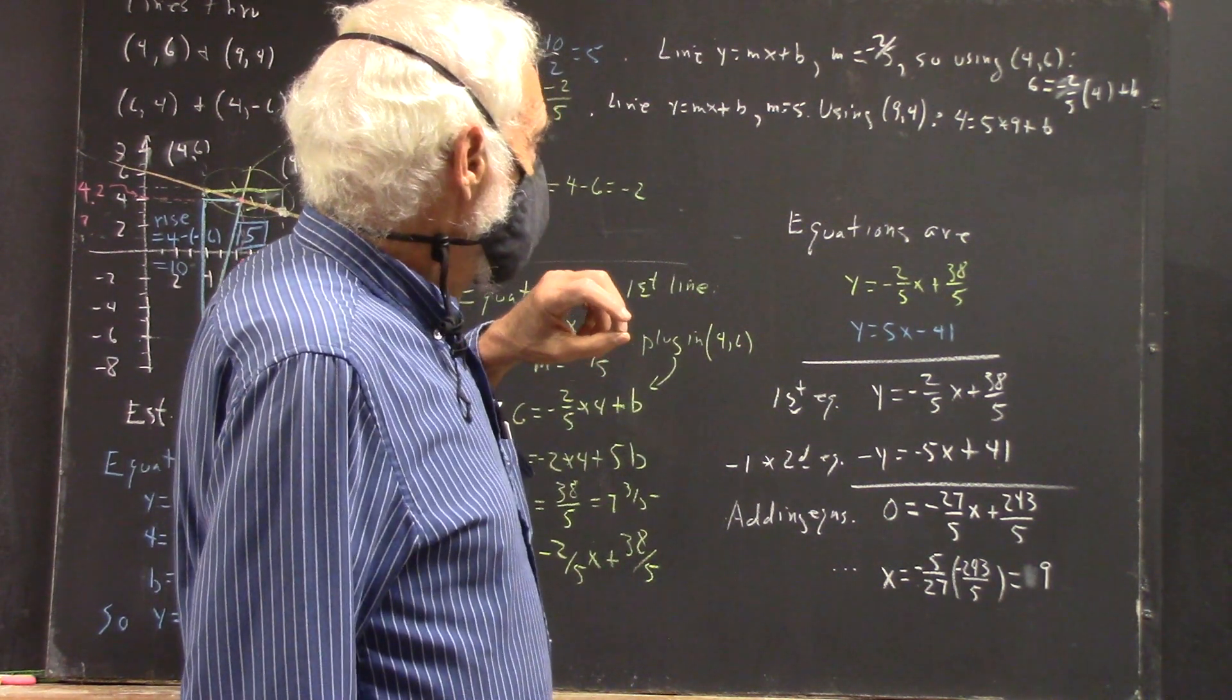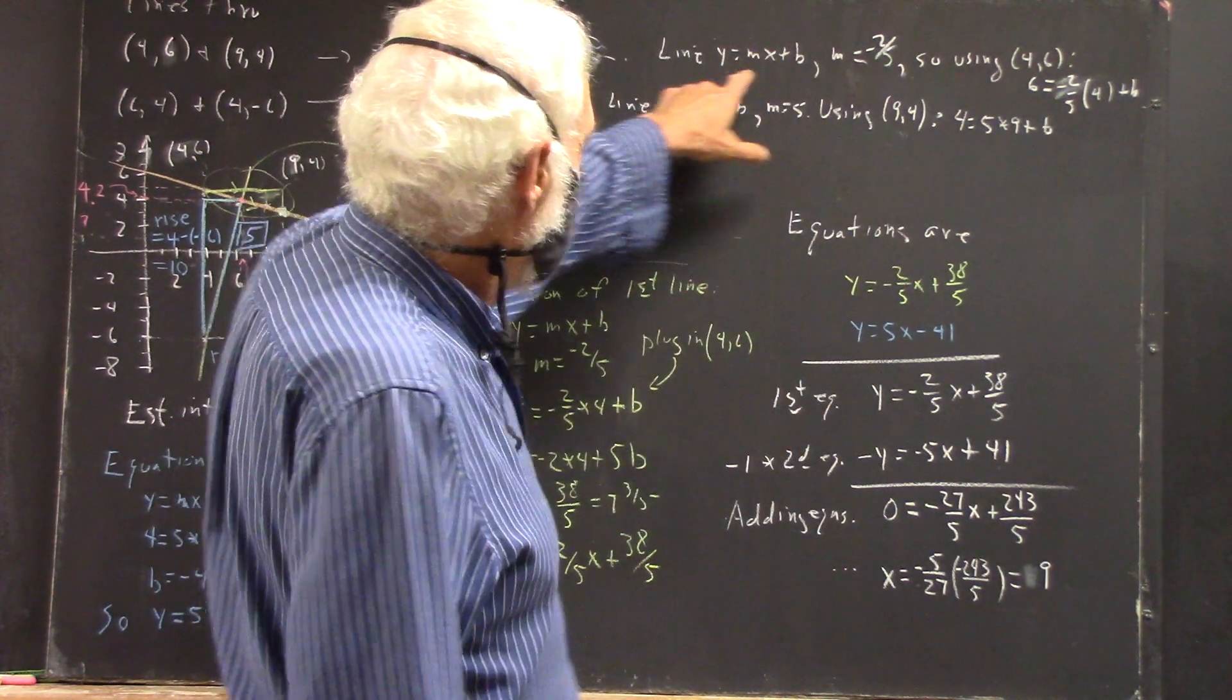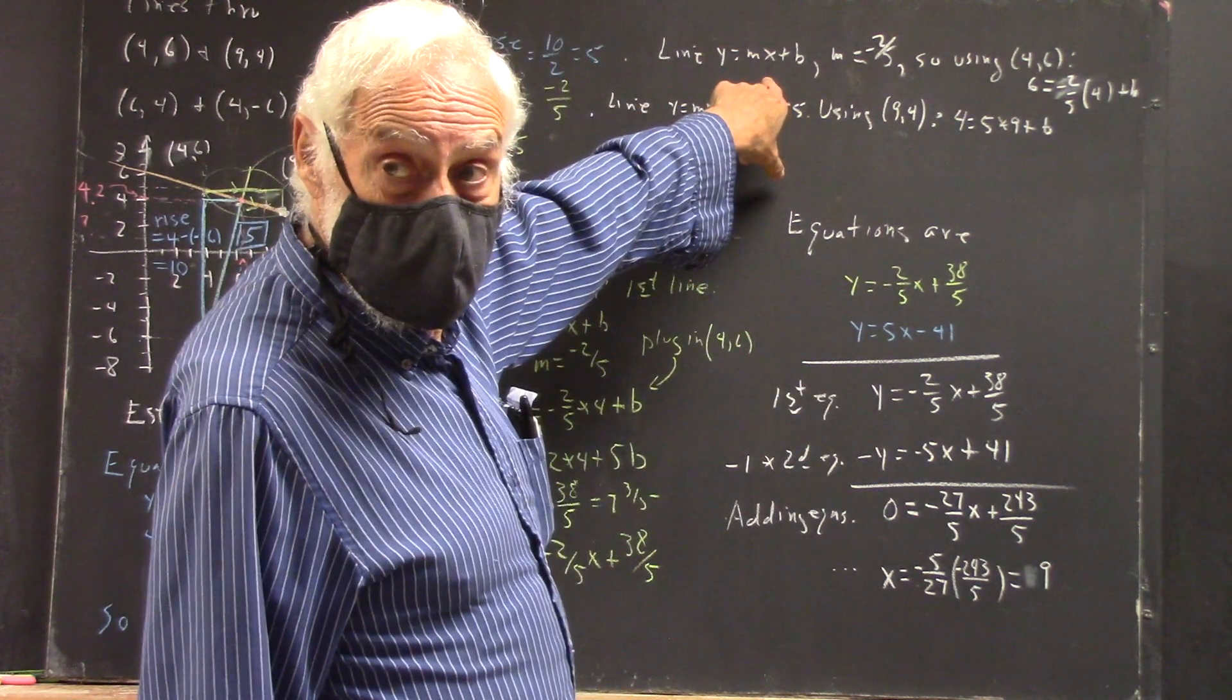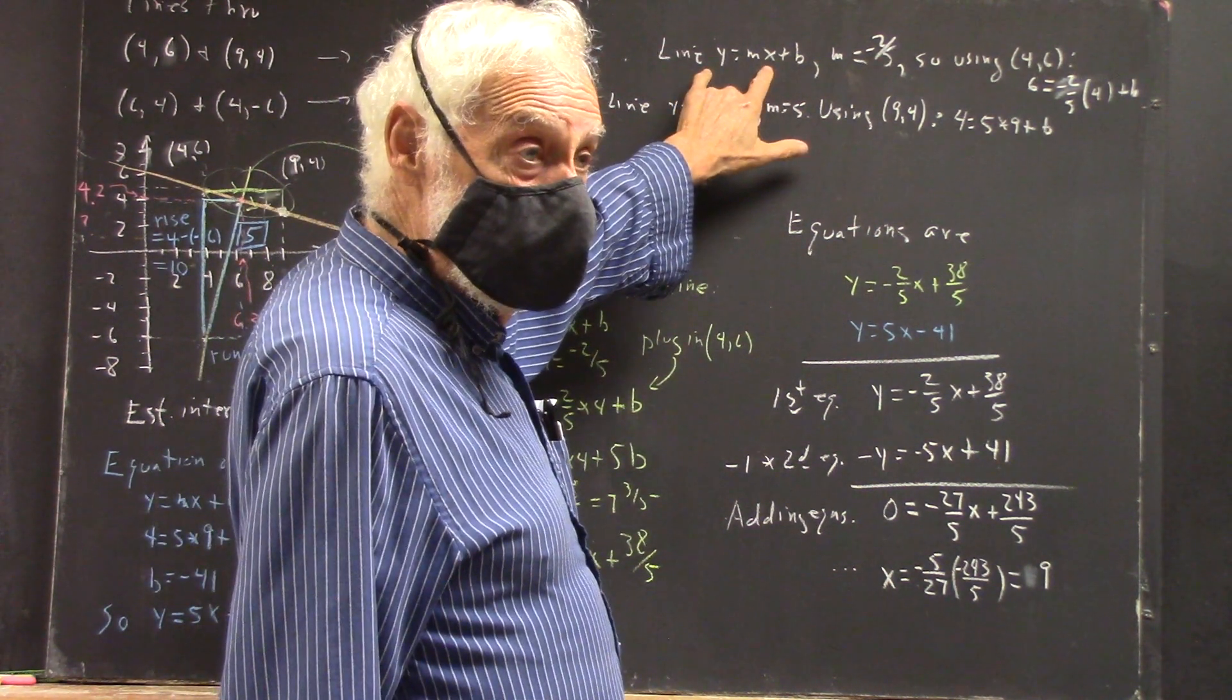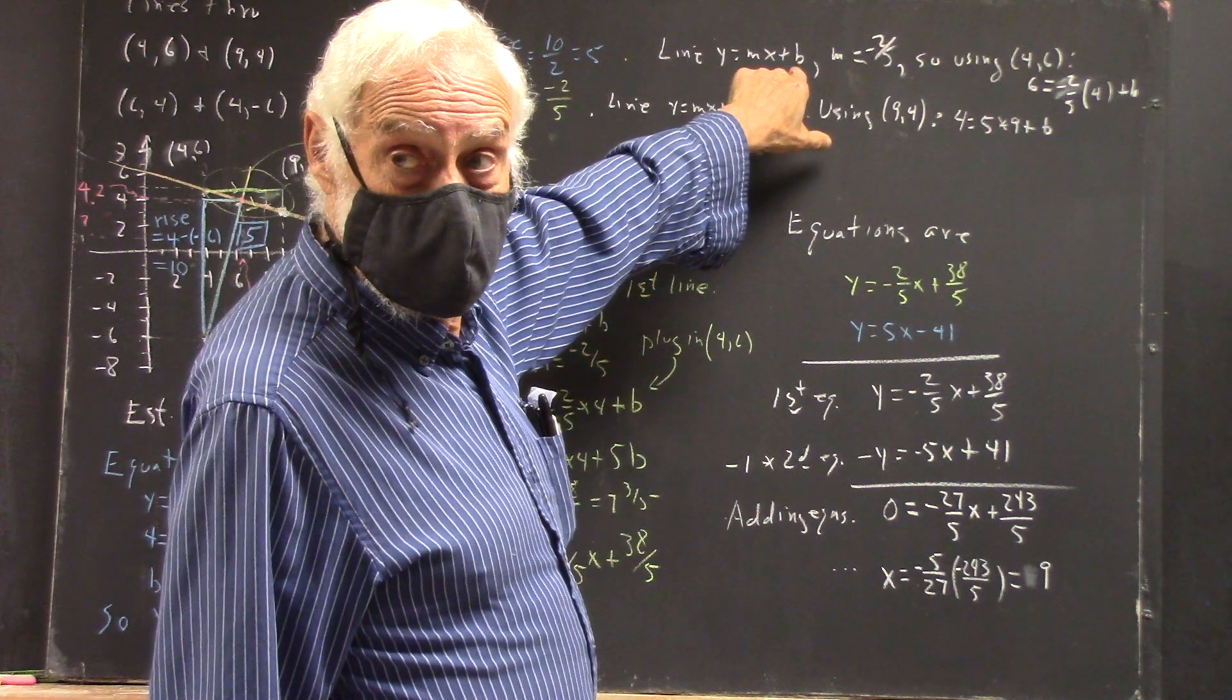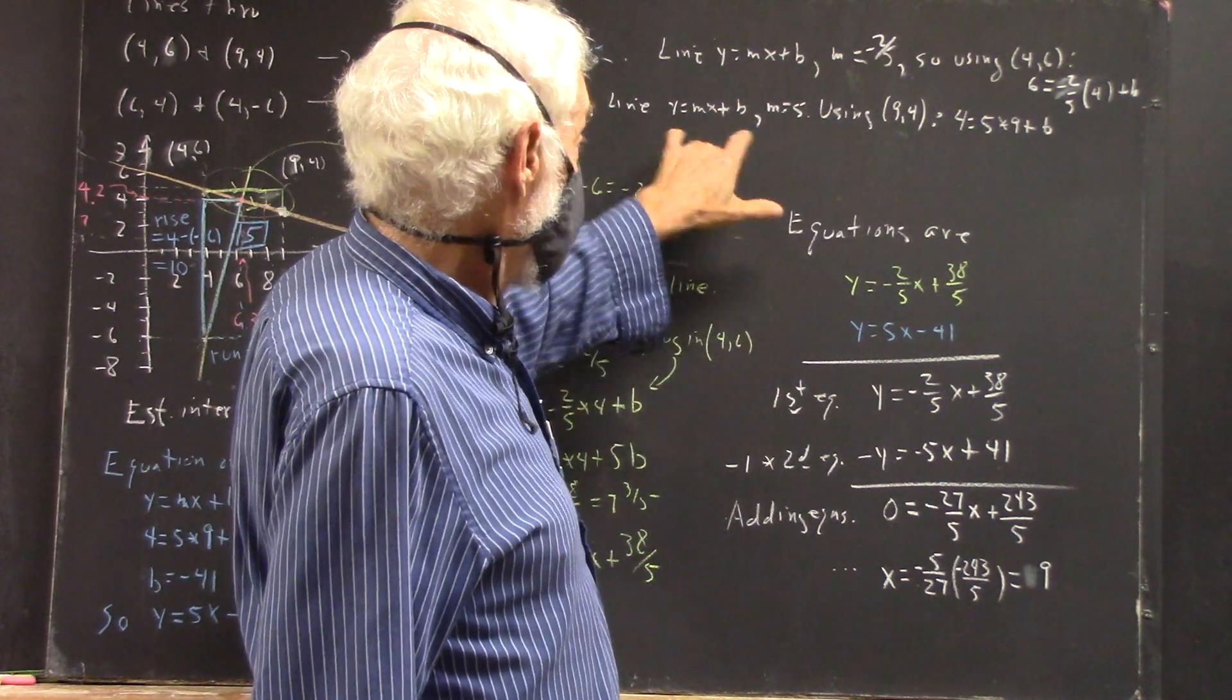So, anyhow, the idea is, if you use the mx plus b form, if you know m and you know an x and a y, you can solve for b, right?